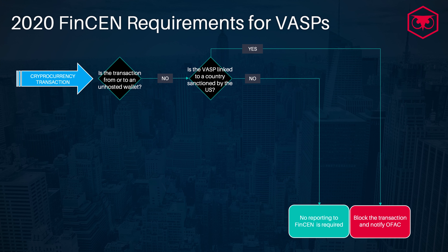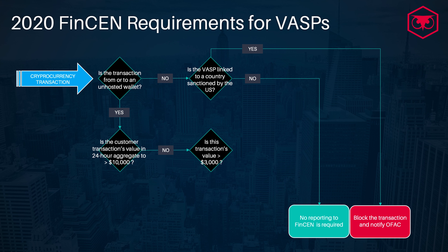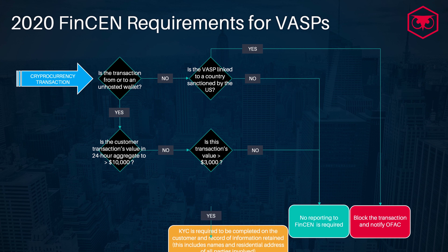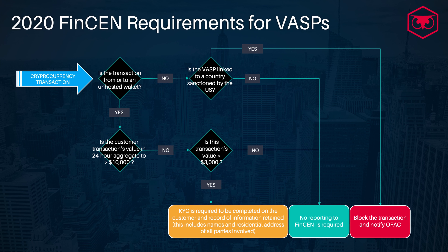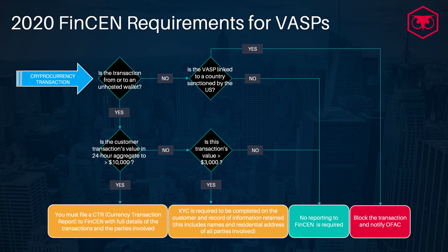To simplify what we've just discussed, the next slide provides a decision flow. From the perspective of a virtual asset service provider — treated the same as a money service business — when a cryptocurrency transaction takes place, the first question is whether it is coming from an unhosted wallet. If not, the VASP still needs to determine whether the entity sending the transaction is located in a sanctions-exposed jurisdiction. If so, the transaction must be blocked and a notification must be provided to the Office of Foreign Assets Control. If not, no reporting to FinCEN is required.